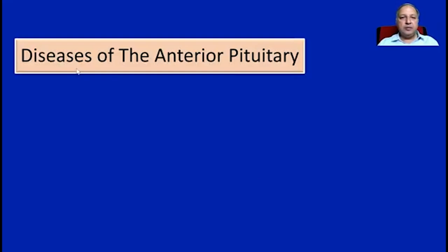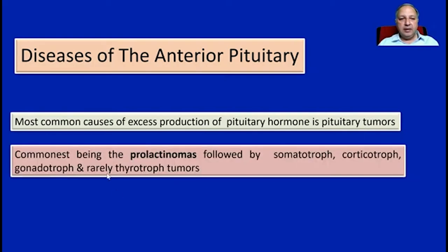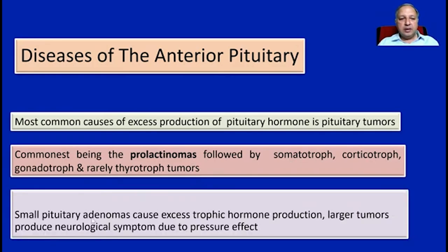Regarding applied aspects and diseases of the anterior pituitary: the most common cause of excessive production of pituitary hormone is tumors in the pituitary gland. The commonest of these tumors is prolactinomas, followed by somatotroph, corticotroph, and gonadotroph tumors, with thyrotroph tumors being very rare. We can also have small pituitary adenomas that cause excessive trophic hormone production, and larger tumors can lead to pressure effects causing neurological symptoms.